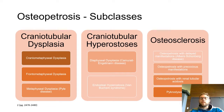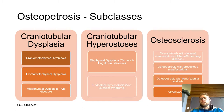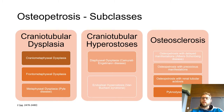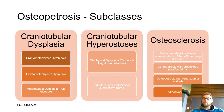Osteopetrosis is the parent group with three subclasses. Albert Schönberg's disease is classified under osteopetrosis with delayed manifestations. It is a sclerotic condition caused by a mutation in the CLCN7 gene. In normal bone, osteoblasts build bone and osteoclasts resorb bone in balance. The CLCN7 mutation inhibits osteoclast formation, disrupting this balance.